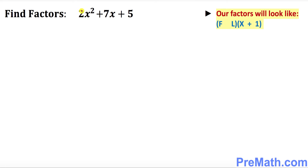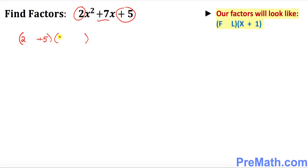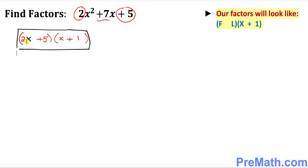Let's look at this example. Our first number is 2, our last number is positive 5, and if you add them you're going to get positive 7. So we put down two parentheses — the first number is 2 and the second number is positive 5. In the second parentheses always x plus 1. The next step is you put x next to the first number, and that is your answer.